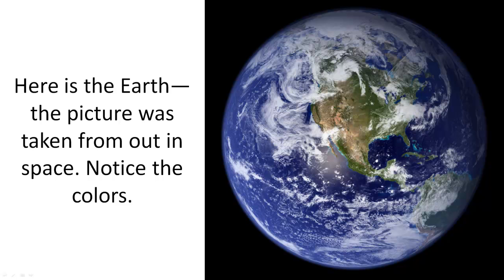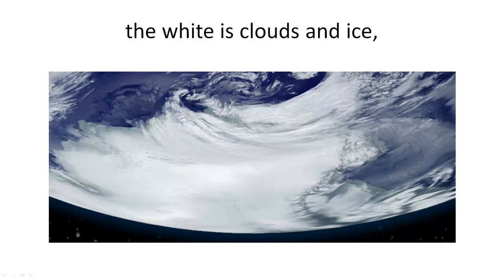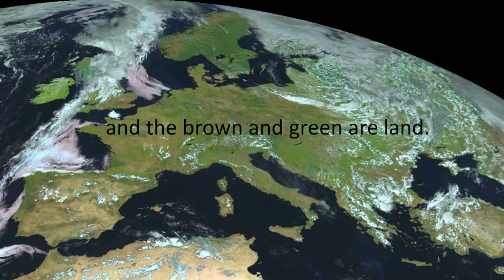Here is the Earth. The picture was taken from out in space. Notice the colors. The blue is water. The white is clouds and ice. And the brown and green are land.